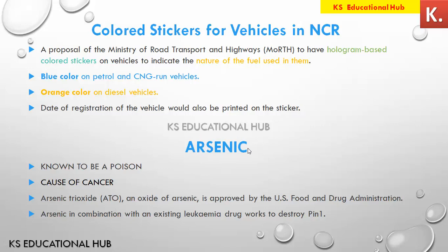The next news item is about arsenic. Arsenic is an element known as a poison and also a cause of cancer when mixed with drinking water. In some areas of India, arsenic has been found in groundwater which is a cause of concern. However, arsenic trioxide, a form of arsenic oxide, is used in food and is even approved by the US Food and Drug Administration.